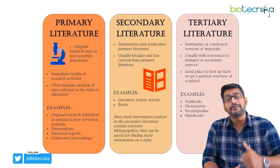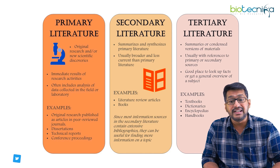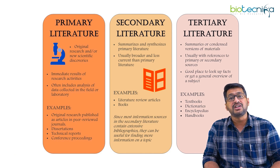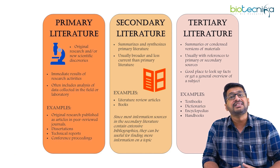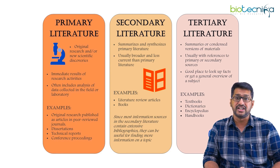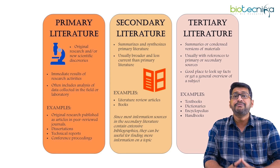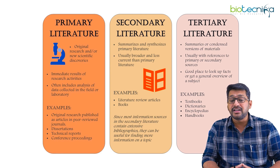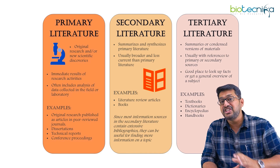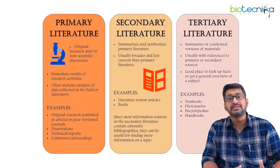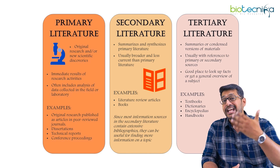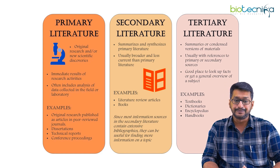The first type of literature is called primary literature, the second type is called secondary literature, and the third one is called tertiary literature. It is very crucial to understand these three major types because depending on this, the types of scientific papers would differ.